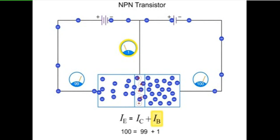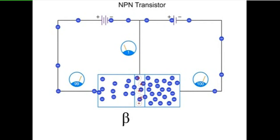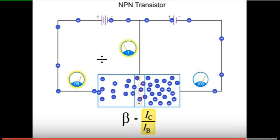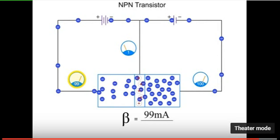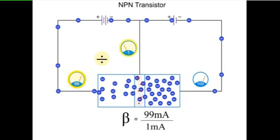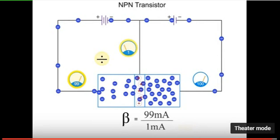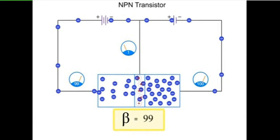An important characteristic of a transistor is something called beta. Beta is calculated by dividing the collector current, IC, by the base current, IB. So, in this example, beta would be equal to 99 milliamps, the current at the collector, divided by 1 milliamp, the current at the base, giving a beta of 99.